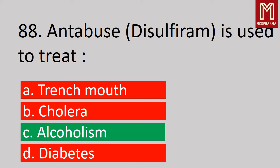Next, disulfiram is used to treat alcohol abuse — correct answer, Option C: Alcoholism.